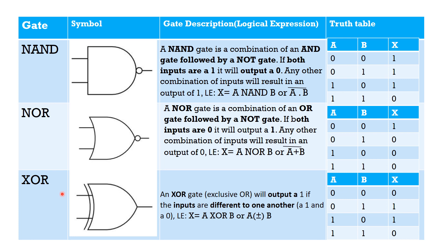Exclusive OR or XOR — it will look like this. Exclusive OR will output a 1 if the inputs are different from one another. So if both inputs are different, the output will be 1. XOR is usually represented as A XOR B, written as A⊕B. In the truth table, A and B are inputs and X is the output. For 0,0 it's 0; for 0,1 it's 1; for 1,0 it's 1; and for 1,1 it's 0.